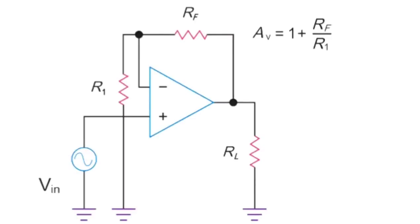Thus, increasing the RF value in a non-inverting amplifier circuit results in the amplification of the output voltage that is in phase with the original input signal.